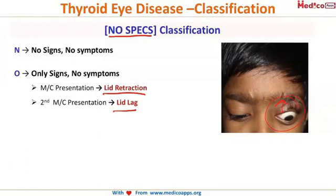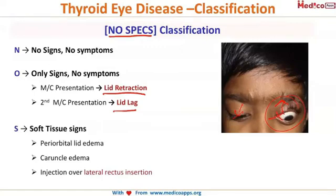Lid retraction is where the lid appears pulled up. By lid lag, I mean the patient is looking downwards and if you look at this eye, the lid is going downwards but this lid is not following — that is lid lag. So O covers lid retraction and lid lag.